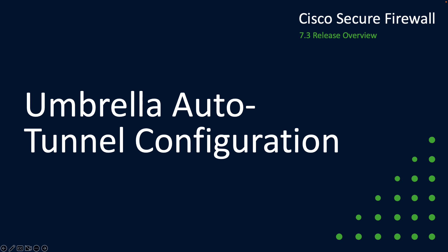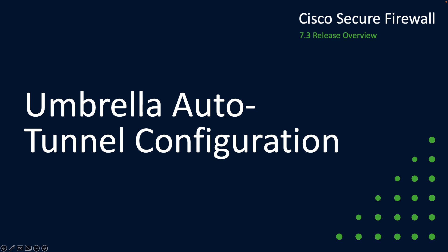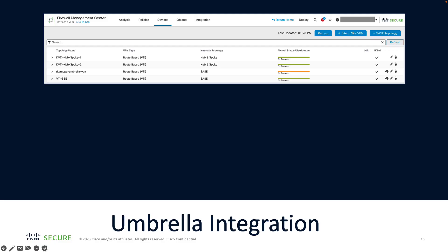Now let's take a look at our Umbrella Auto Tunnel configuration. We've simplified the process of connecting your secure firewall devices to the Cisco Umbrella cloud service. Integration of secure firewall with Umbrella helps organizations deploy a common DNS security policy, whether their users are on networks protected by secure firewall or working remotely. Integration up to now involved configuration of both the firewall management center and within the Umbrella portal. In 7.3, a new simplified interface, along with a new type of site-to-site VPN topology called the SASE topology, allows users to create and deploy network tunnels directly to Cisco Umbrella from the firewall management center, helping to reduce the risk of configuration errors by automating much of the process.